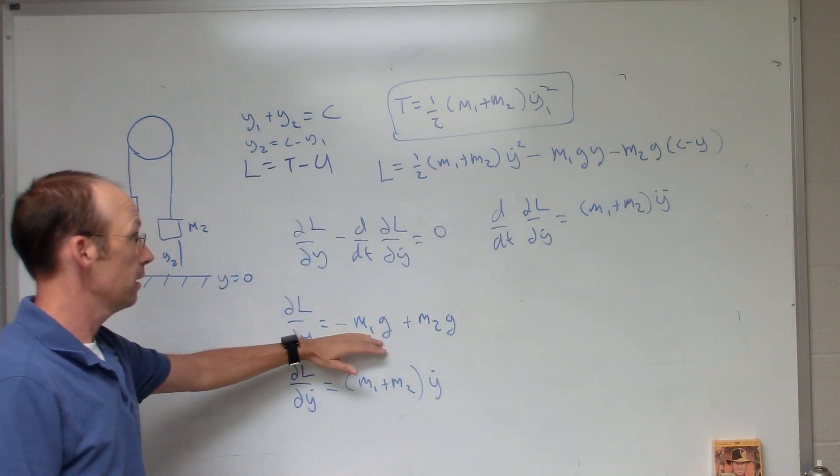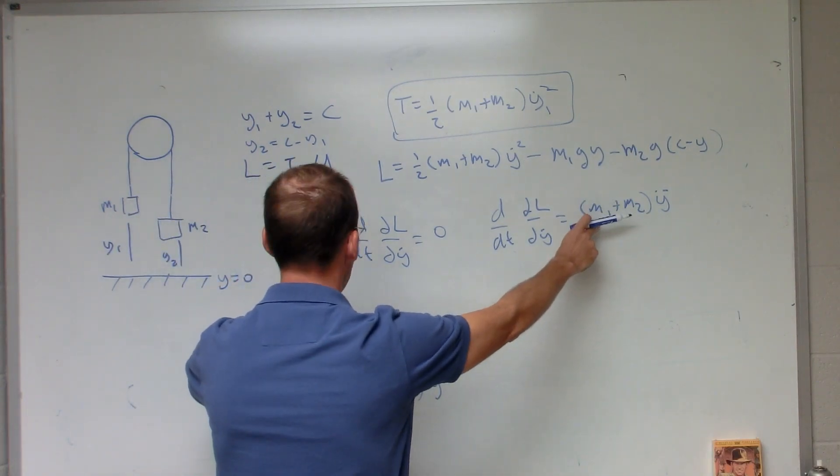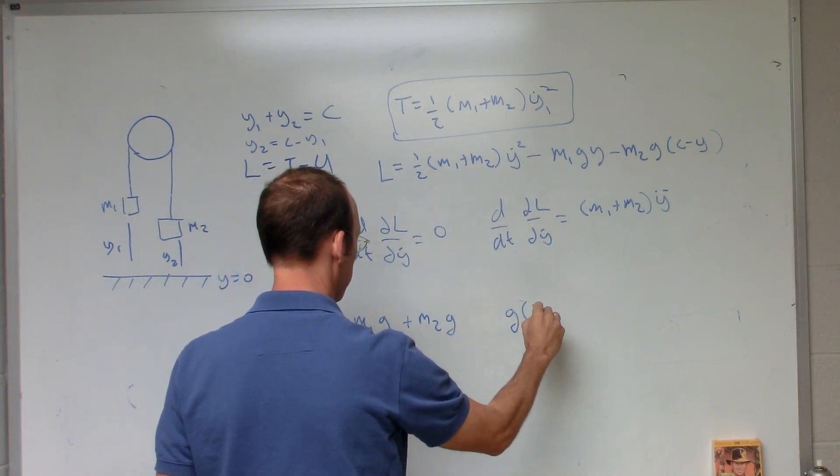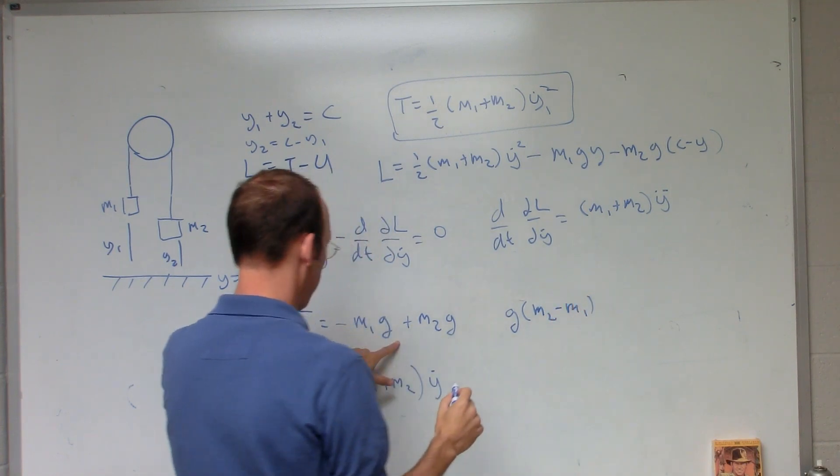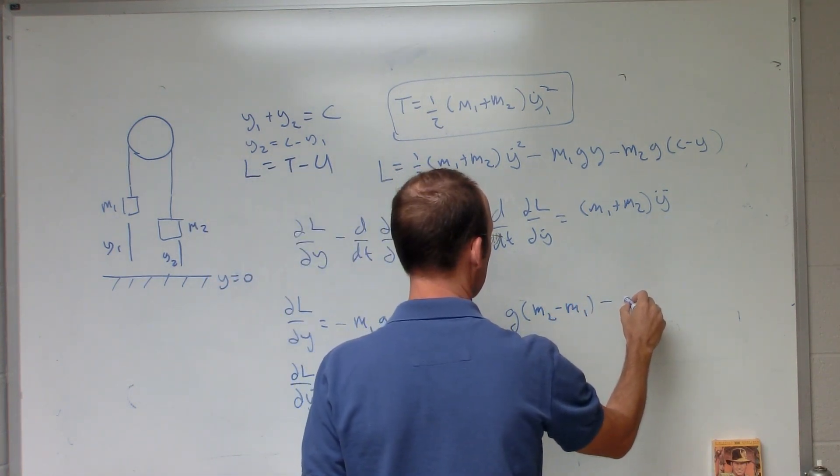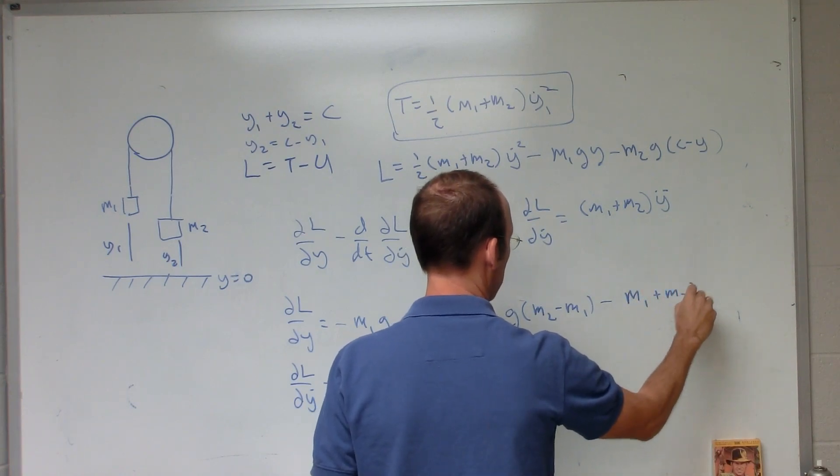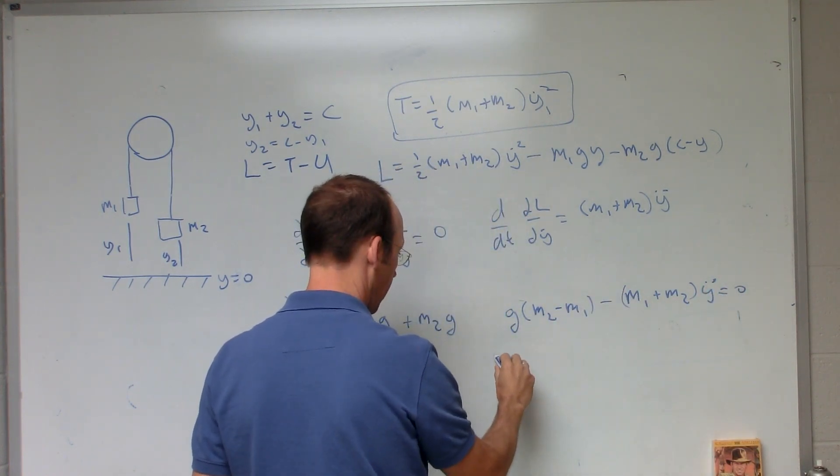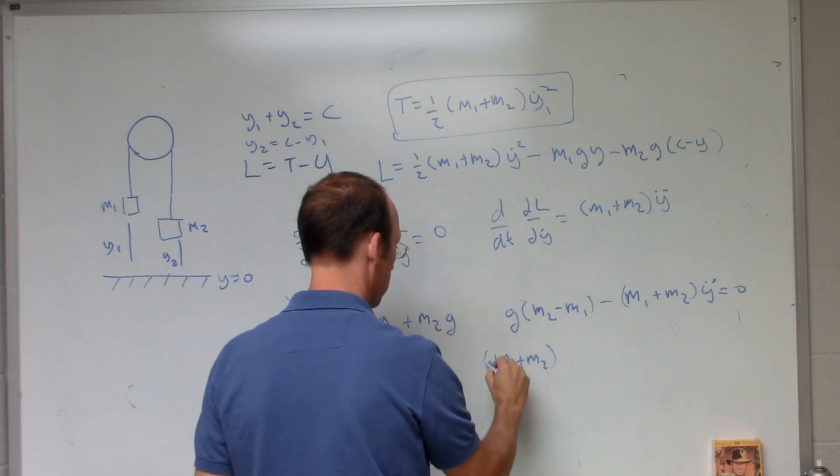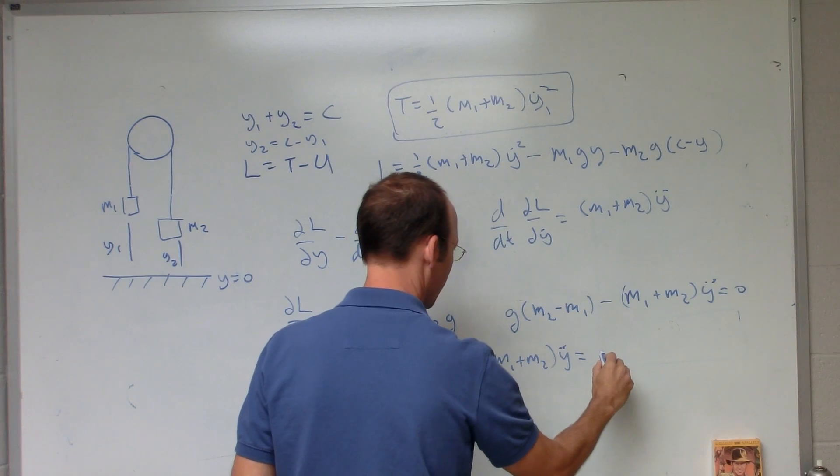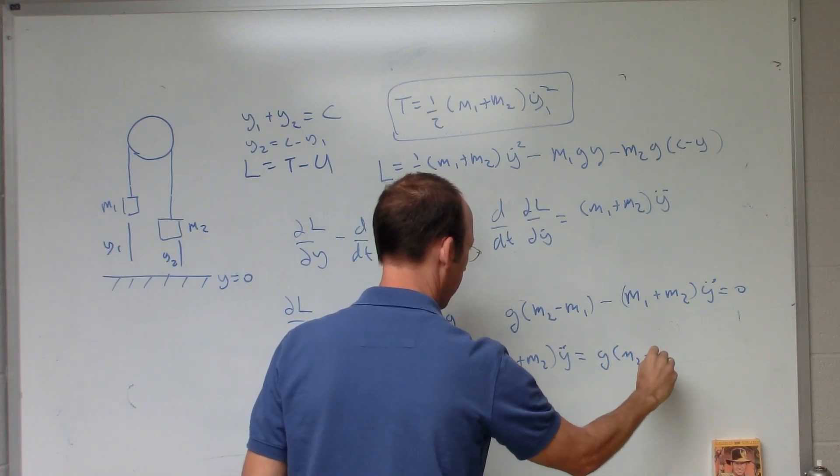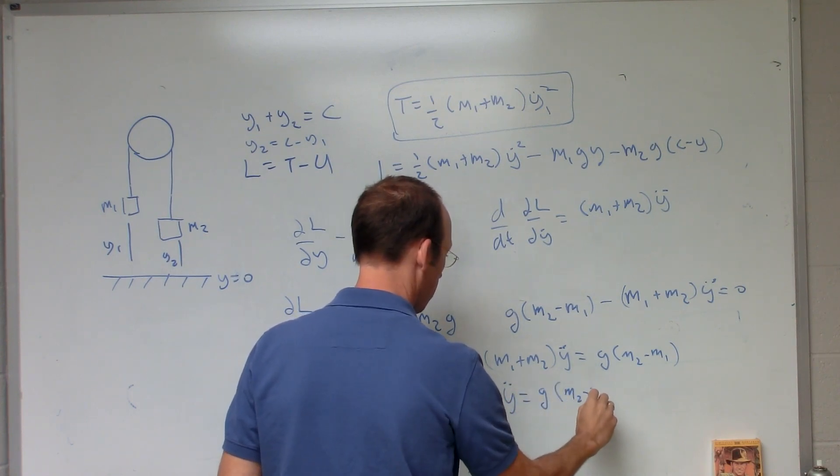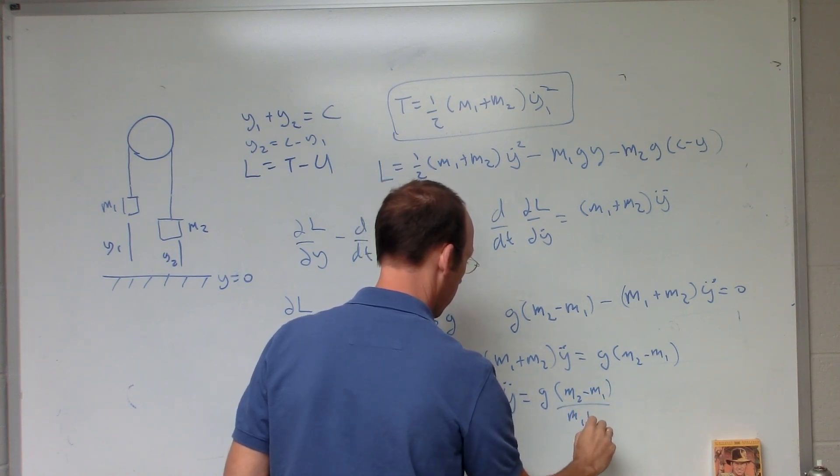So now I have this minus that equals zero. So I have, I'll write this as G times M2 minus M1, that's the same thing, minus M1 plus M2 Y double dot equals zero. So I could add that to both sides. M1 plus M2 Y double dot equals G M2 minus M1. So Y double dot equals G M2 minus M1 over M1 plus M2.